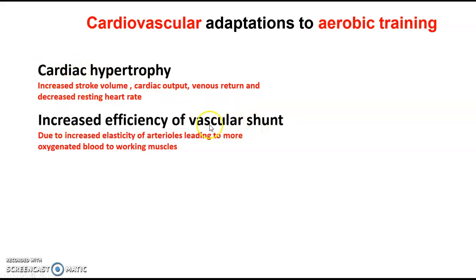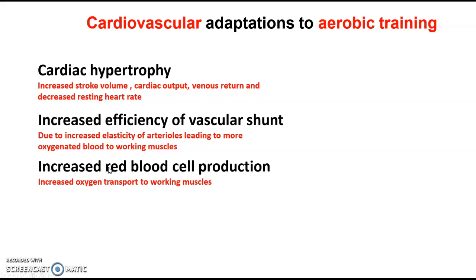Next: increased efficiency of vascular shunts. When we're trying to redistribute blood to the working muscles, if we do aerobic training we increase the efficiency of it because we increase the elasticity of the arterioles — the vessels that push blood towards the working muscles. This means we get more oxygenated blood through the working muscles. On top of that, we increase red blood cell production or haemoglobin content, which means we can increase oxygen transport into the working muscles.